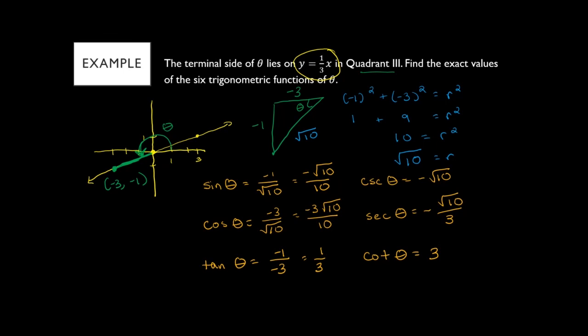If you have an equation of a line, you can always find the angle between that line and the horizontal axis by drawing a right triangle based on a point on the line and using the trig functions. We'll actually get into that in week 7 when we discuss the angle between two lines. Thank you to the student who was able to pop in.